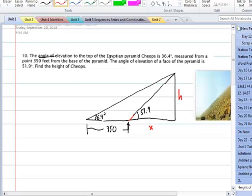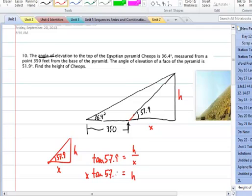So our first triangle will be the smaller one. That'll be H, X and 57.9. So you want to write up your tangent equation as we went over in class. And then you solve for H and you're going to get X tan of 57.9.